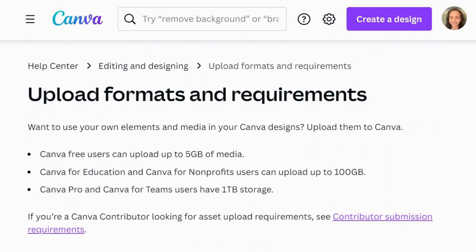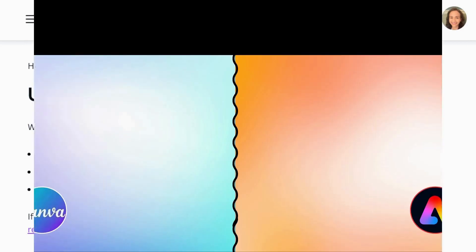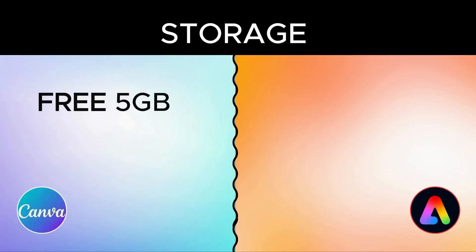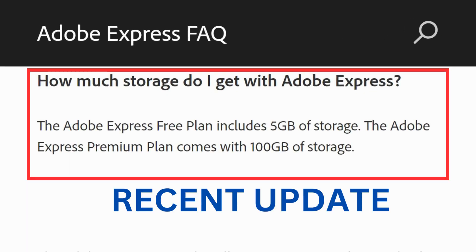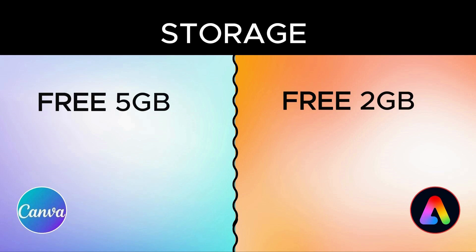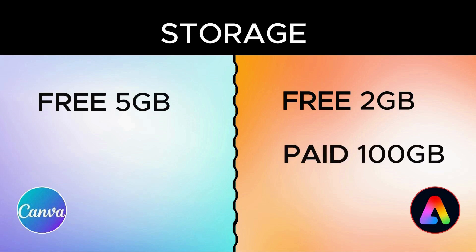Canva is quite generous when it comes to storage space. Their free plan provides 5GB of storage, while Adobe Express's free plan offers 2GB. The major difference lies in the storage offered by their premium plans: Adobe Express's premium plan gives you 100GB of storage, whereas Canva Pro or Canva for Teams provides 1GB of storage per user.